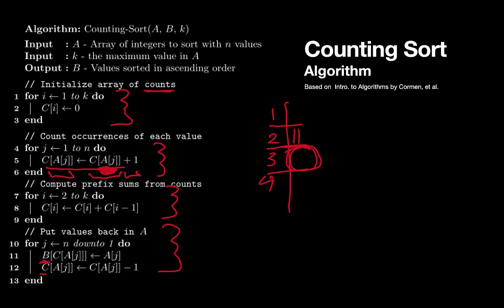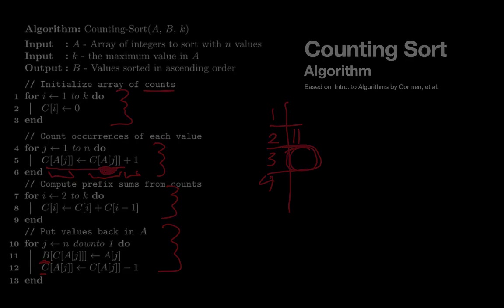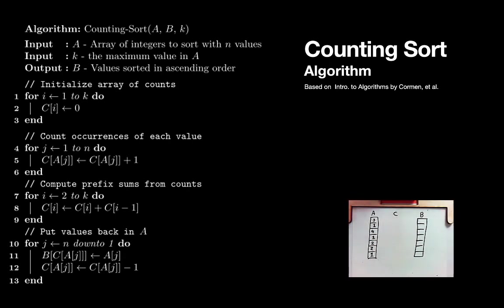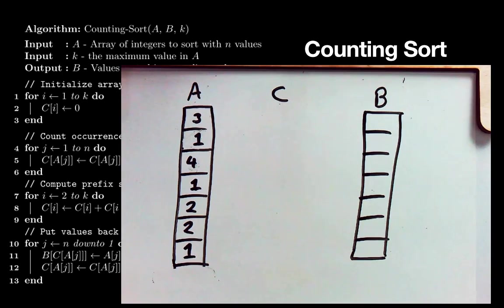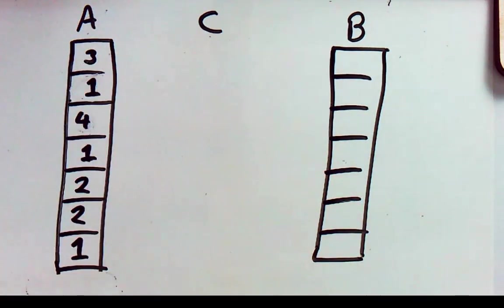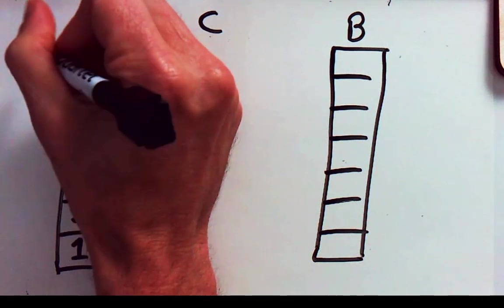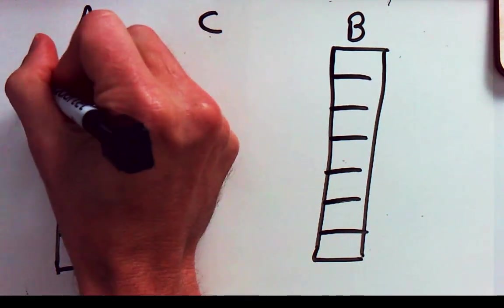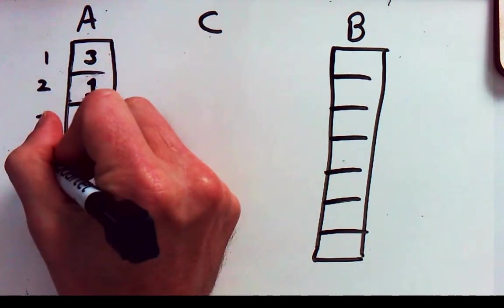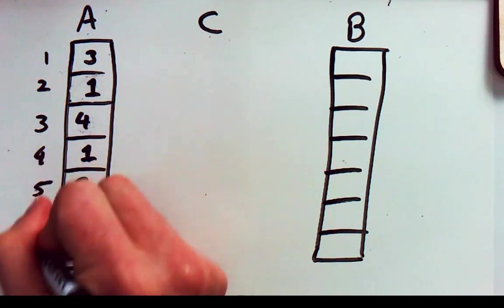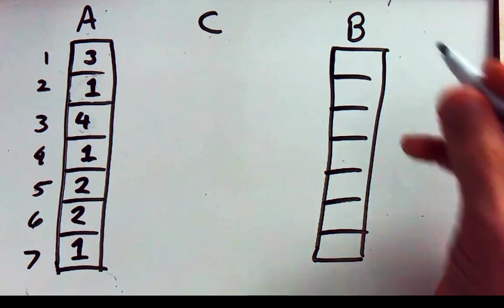Okay so let's go ahead and move on to an example. Okay so we're going to go through an example of the counting sort. So first of all the problem setup, we've got an array A here. A happens to have seven different values in it. I'm going to go ahead and put indices off to the left.